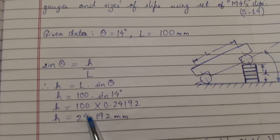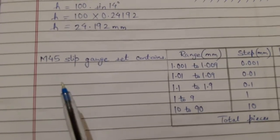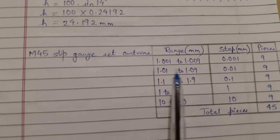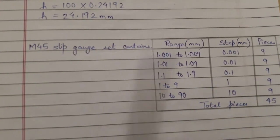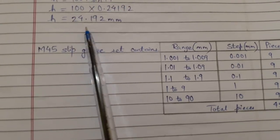M45 slip gauge set contains the following ranges and steps and the number of pieces. For example, we need to develop here 24.192 mm, so we have to start from the third decimal place.